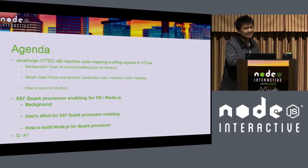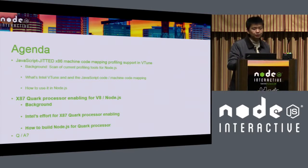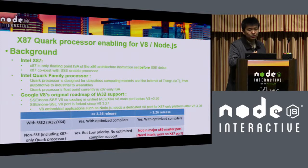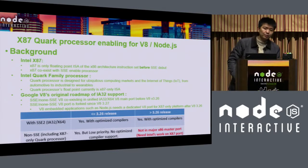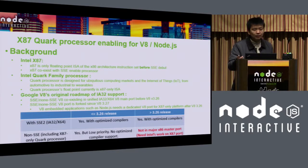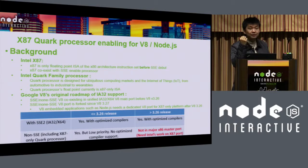The next topic is about the X87 Quark processor enabling for Node.js. First I will introduce the background. The Intel X87 is the floating-point ISA for X86 architecture, introduced before SSE instructions were available, and currently co-exists with SSE for most Intel processors. The Intel Quark processor is designed for ubiquitous computing markets — IoT, industrial, and wearables. Because size is the highest priority for Quark, it has no SSE instruction support — only X87 instructions for floating-point computation.